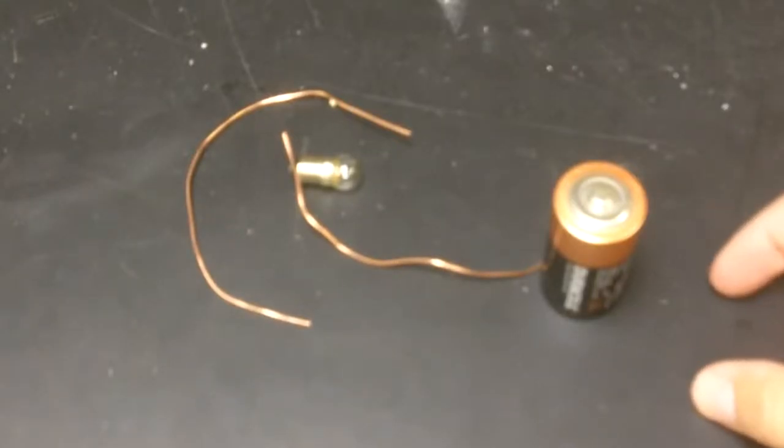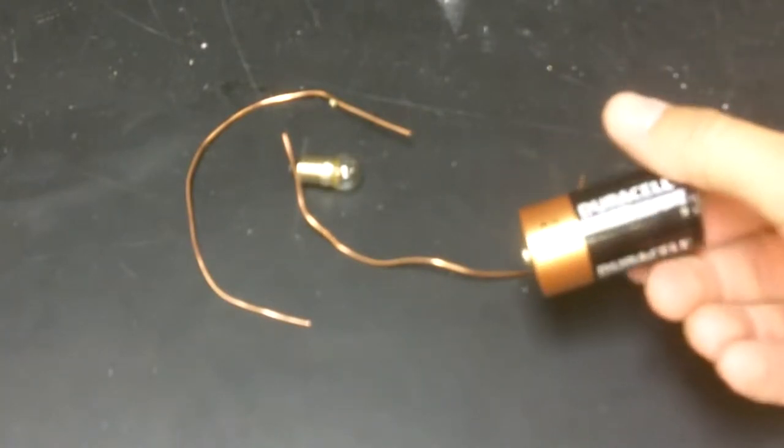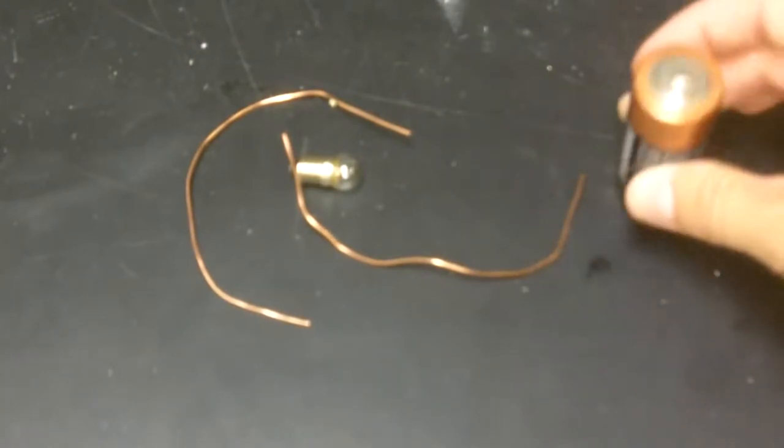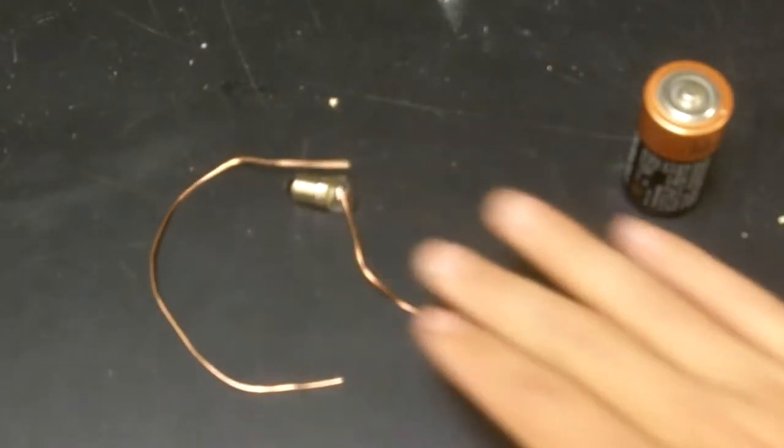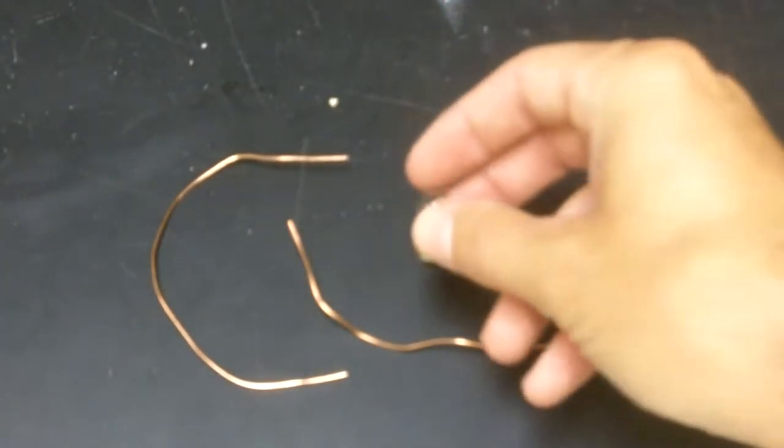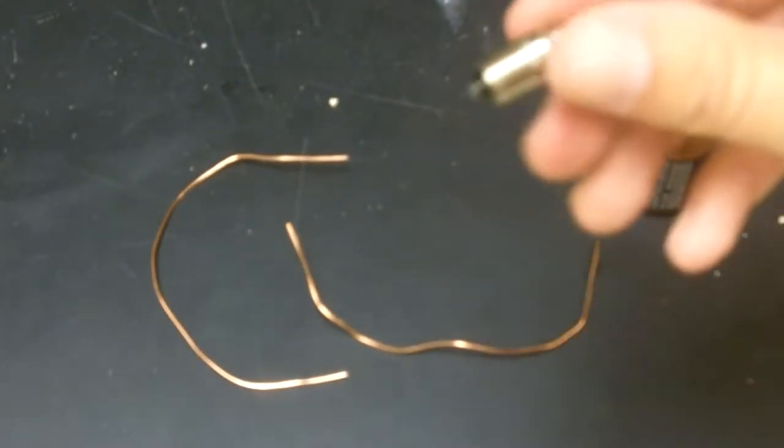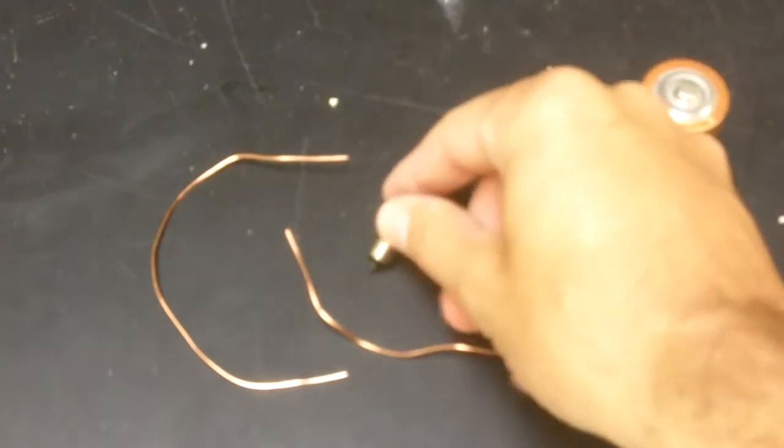Okay, in this activity I have a Duracell C battery. I have two copper wires and then I have a light bulb, and this one says 2.47 volts on it.